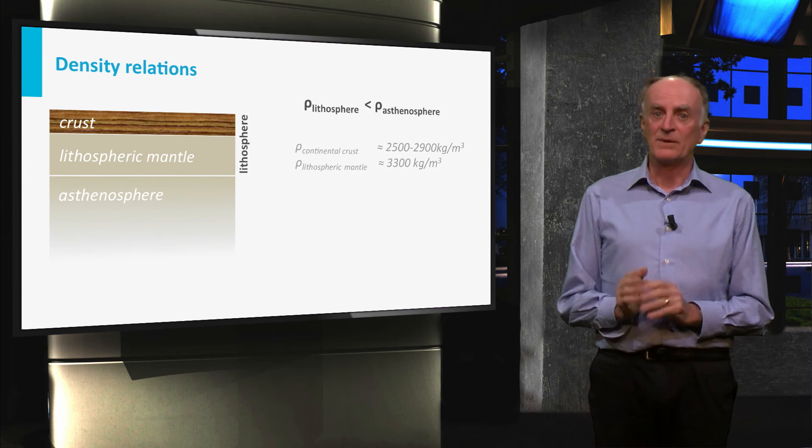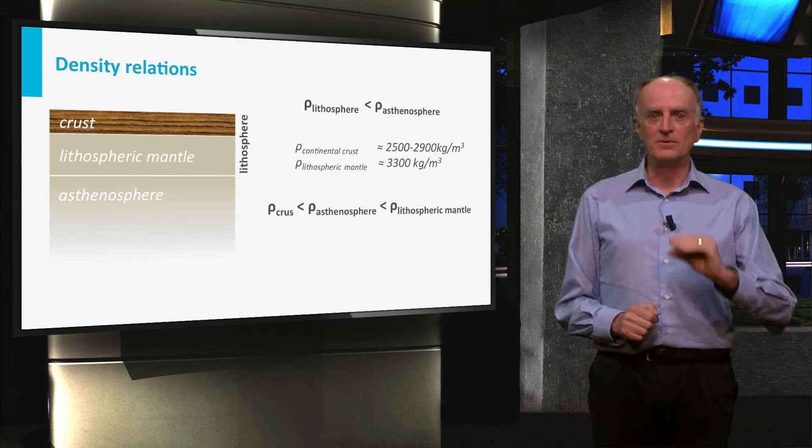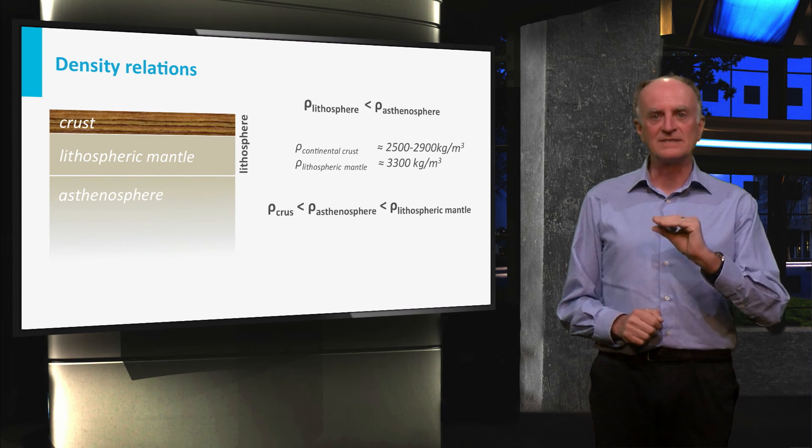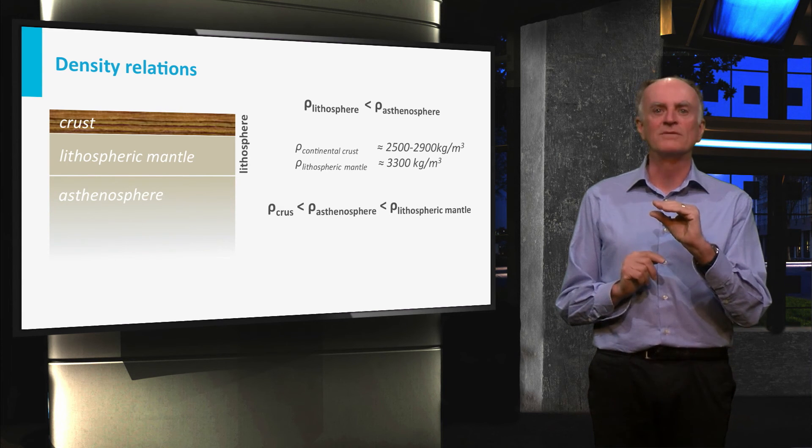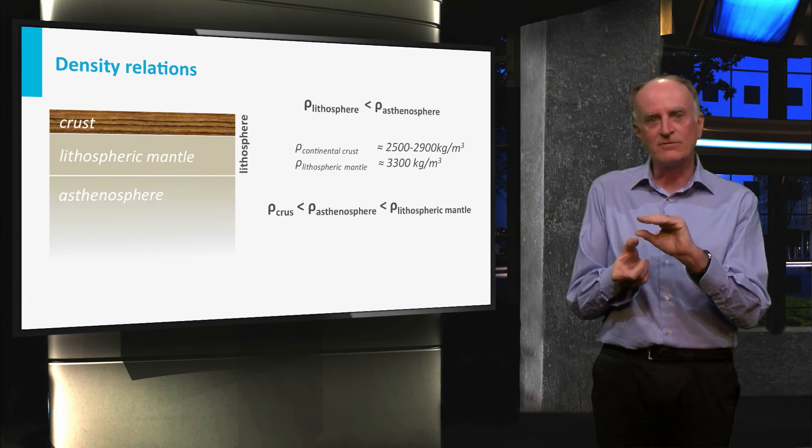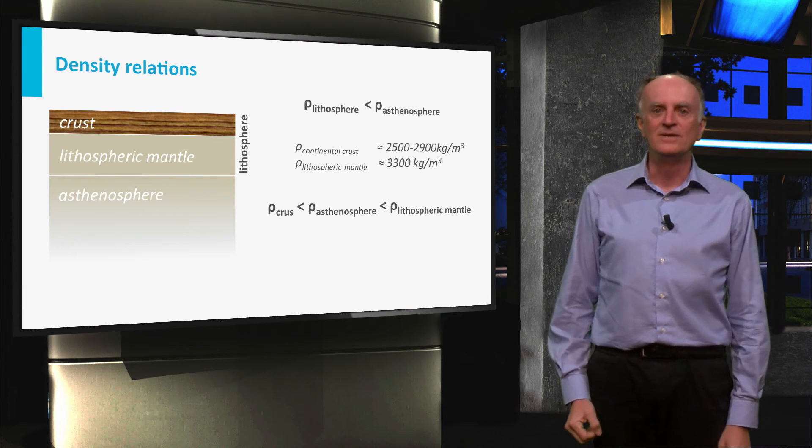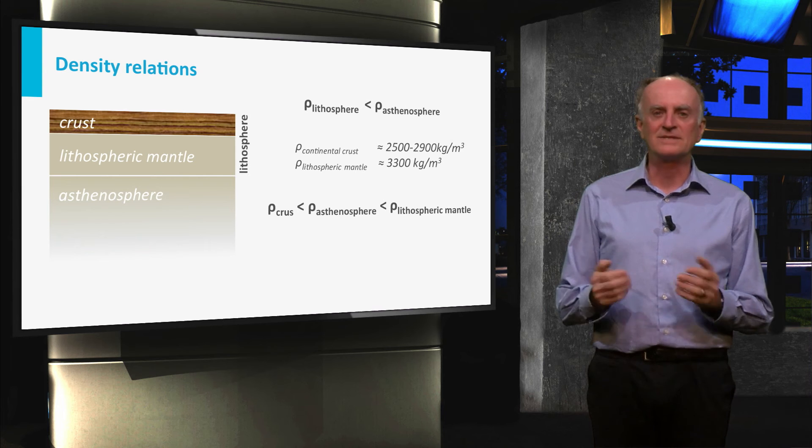But we know that the lithosphere is composed of two layers with very different densities. The crust is composed of low density rocks and the lithospheric mantle made of heavy rocks. You can see representative values in the slide.